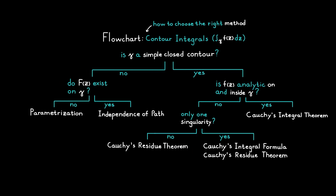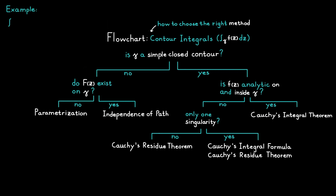Now to really get the hang of this flowchart, we'll do some examples. In this first example, the contour is not a simple closed contour. Since we are dealing with cosine as our function, the antiderivative will exist on the whole contour, and therefore we can solve this contour integral by using independence of path.